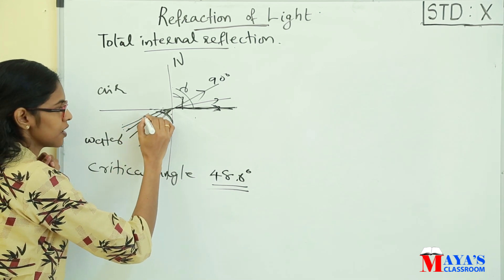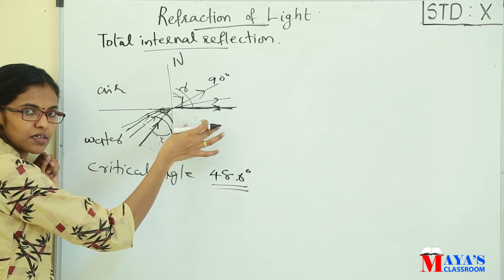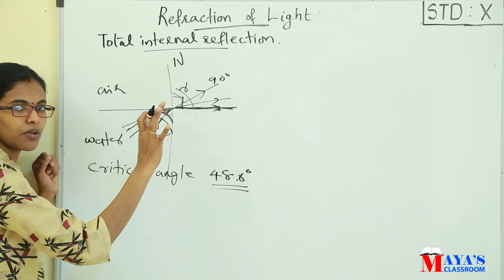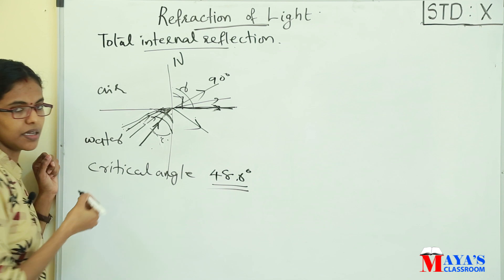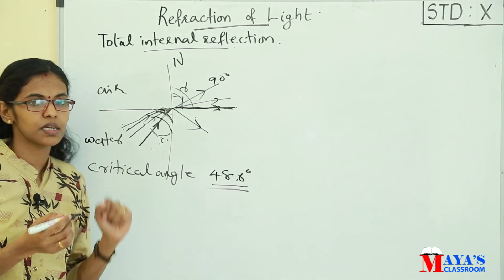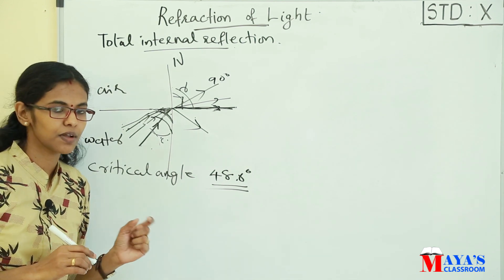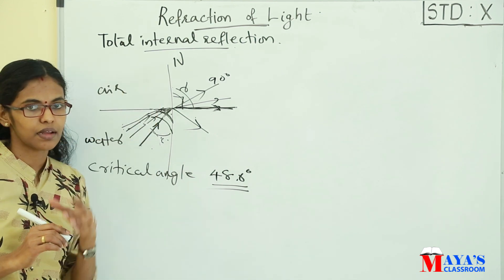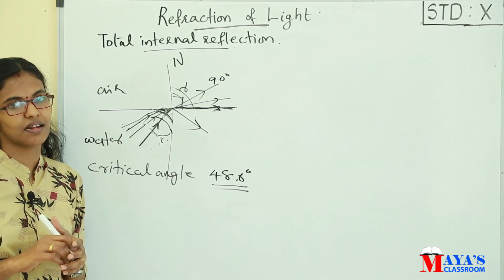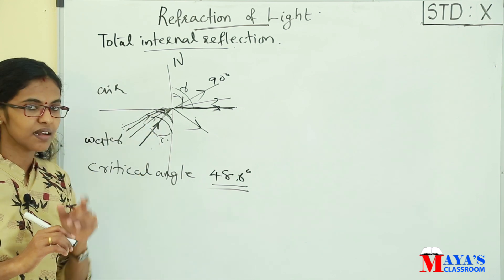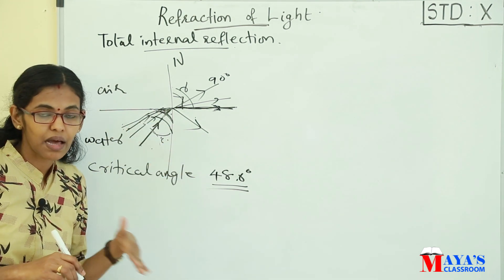Suppose the angle of incidence is 50 degrees. Since this is greater than the critical angle, the ray will be reflected back into the same medium. That phenomenon is known as Total Internal Reflection. When the angle of incidence is greater than the critical angle, the ray is reflected back into the medium.